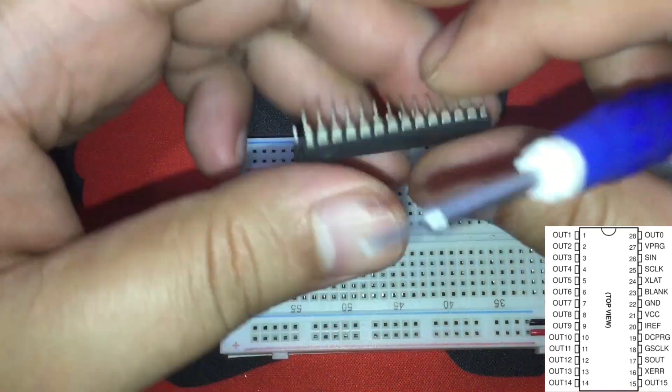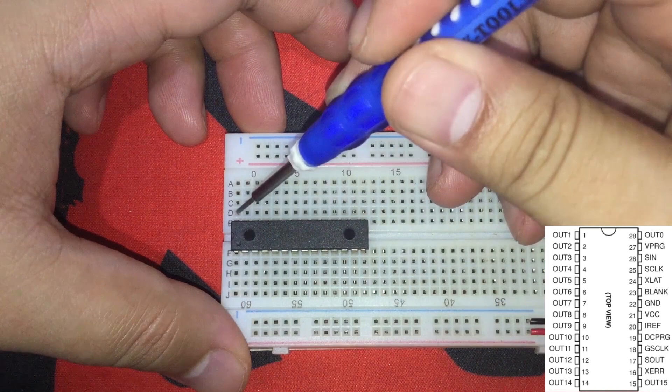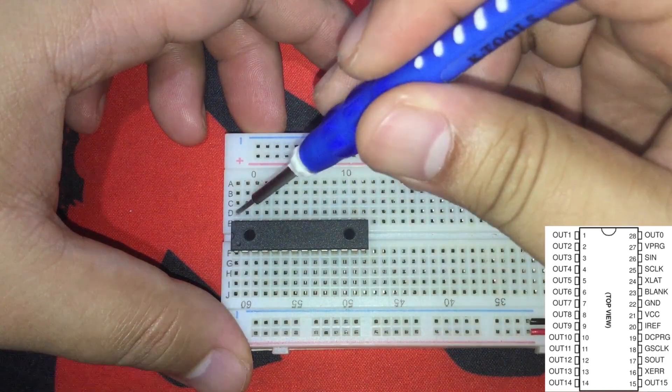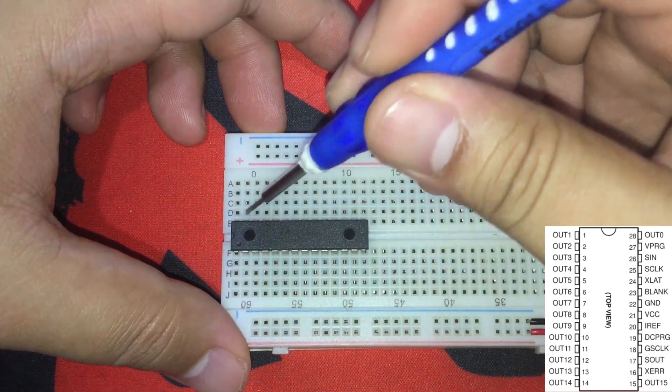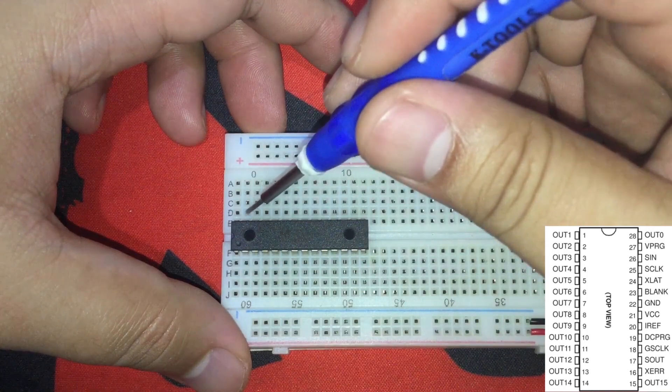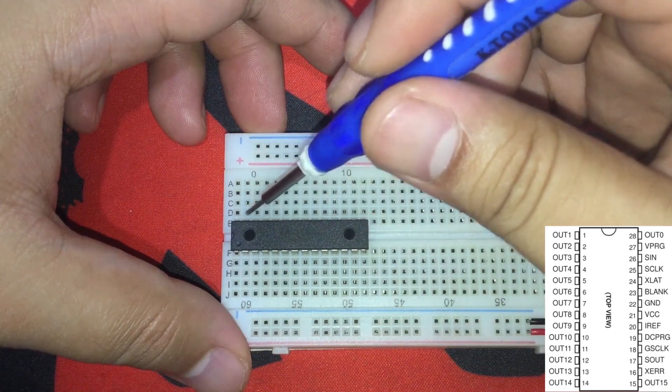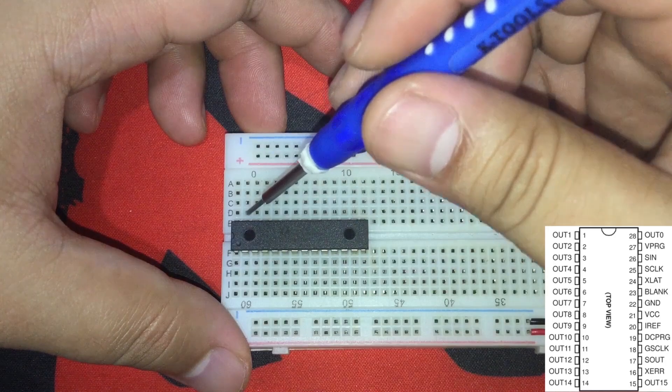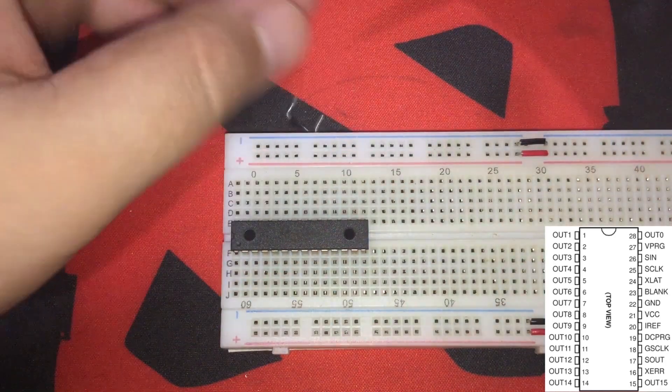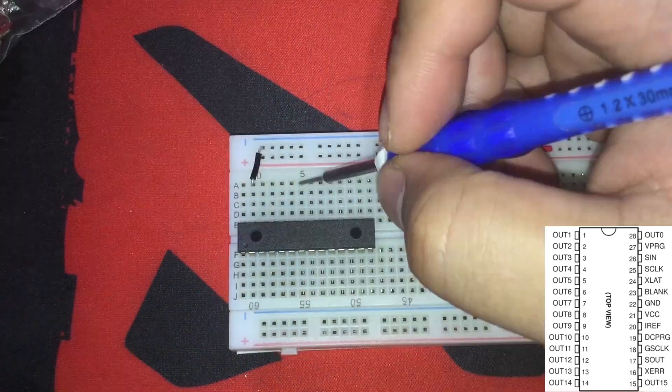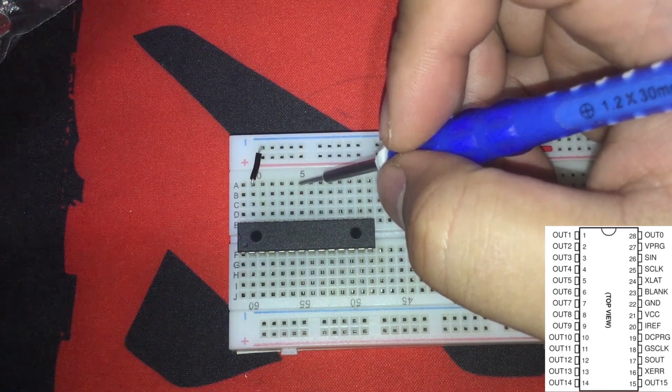First up, let's do the ground connections. This right here is IC pin number 28 or the first output pin. And this is IC pin number 27 or VPRG or V-PROG. V-PROG is supposed to be connected to ground. Let's get some hookup wires. There you go. Pin number 22 is ground.